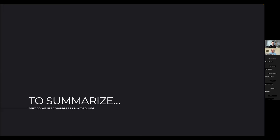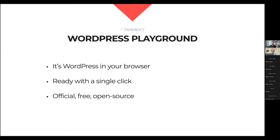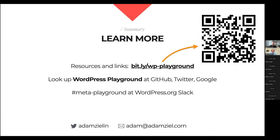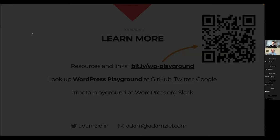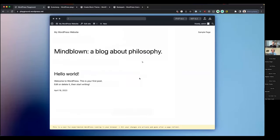To summarize the slides: WordPress Playground is WordPress in your browser. It is ready with a single click. There are APIs you can use to customize it, and it's an official WordPress project — it is free and it is open source. The links are at speed.ly/wordpress-playground. If you look up WordPress Playground on GitHub, Google, or Twitter, you'll find a lot more.